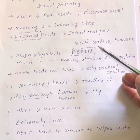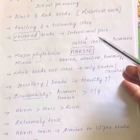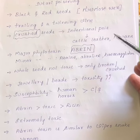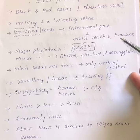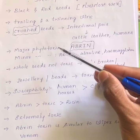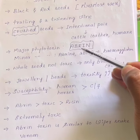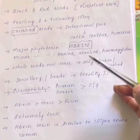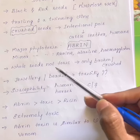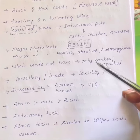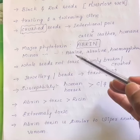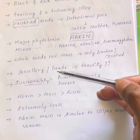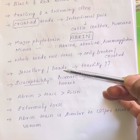Crushed seeds are very commonly used in intentional or malicious poisoning. To obtain cattle leather, people would maliciously poison the cattle. Intentional poisoning in human beings is also done with broken or crushed seeds of Abrus precatorius. The major phytotoxin present is called abrin. Other minor phytotoxins are abrine, abralin, and hemagglutinin. Whole seeds are not toxic — only broken or crushed forms are more toxic.